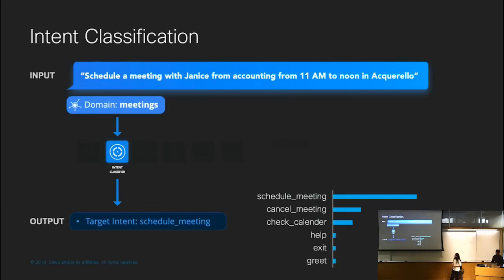Back to our example: now that we are in the meetings domain, from the extracted features, we can then classify this as a schedule-meeting intent within that domain.